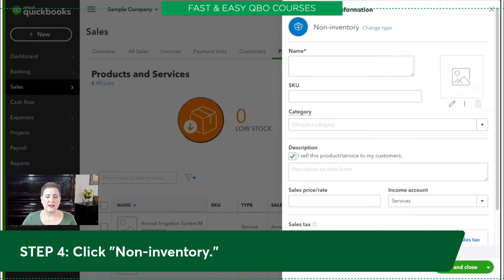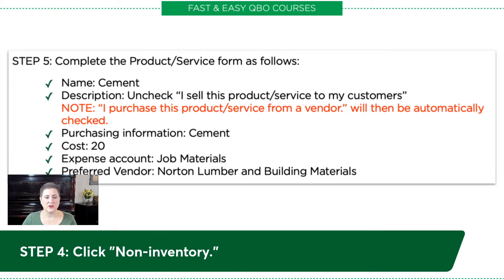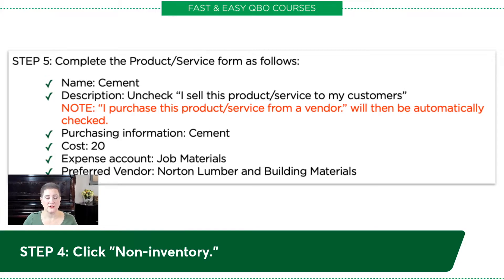Step five is a little more involved, so let's take a look at it from the exercise. It says complete the product and service form as follows: we're going to call it Cement, we're going to uncheck 'I sell this to my customers' because this is something we just buy and use for our customers — we don't sell it back to them. For purchasing information, the description will be Cement, the cost will be $20, and it will be expensed to our Job Materials account. That's super important — that's how we link it to the chart of accounts. And then we're going to select Norton Lumber and Building Supplies.